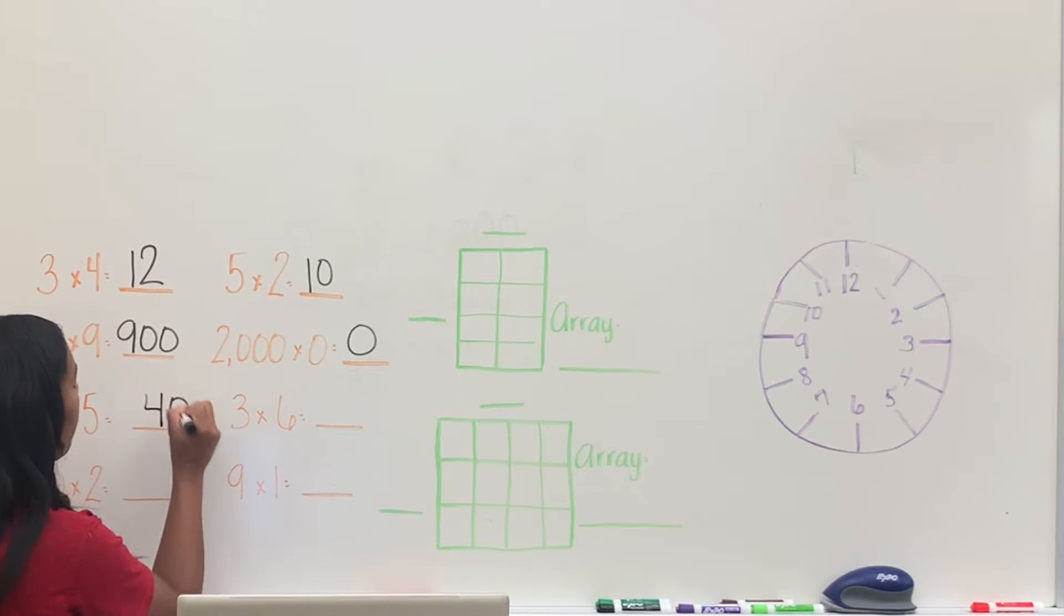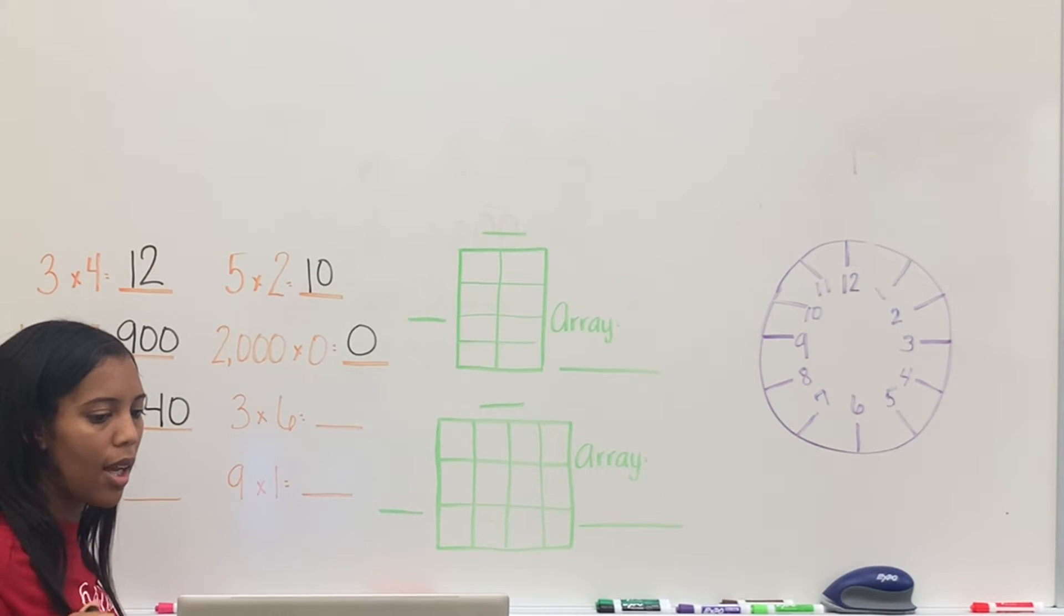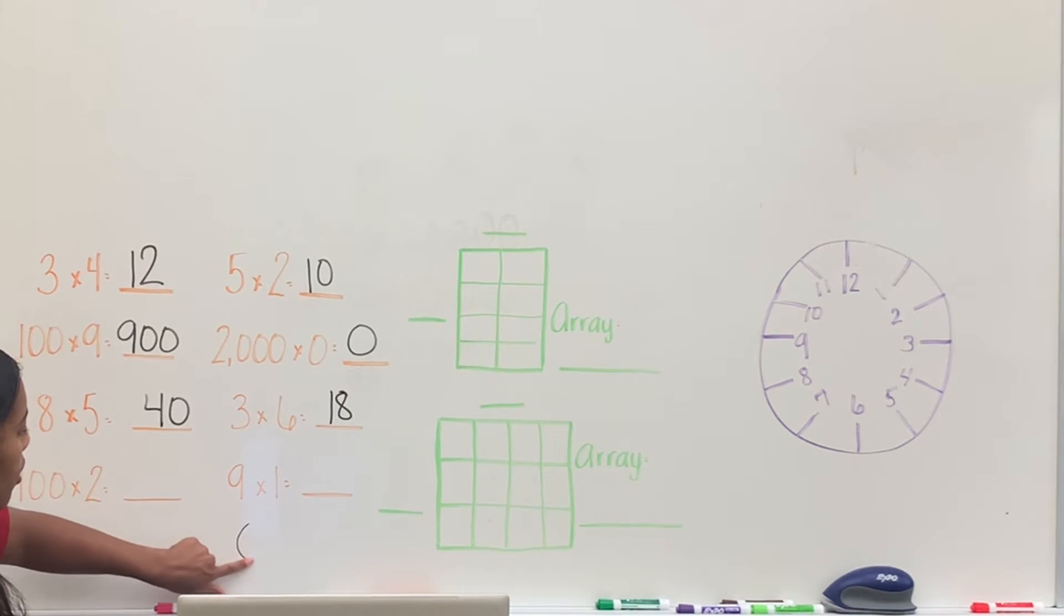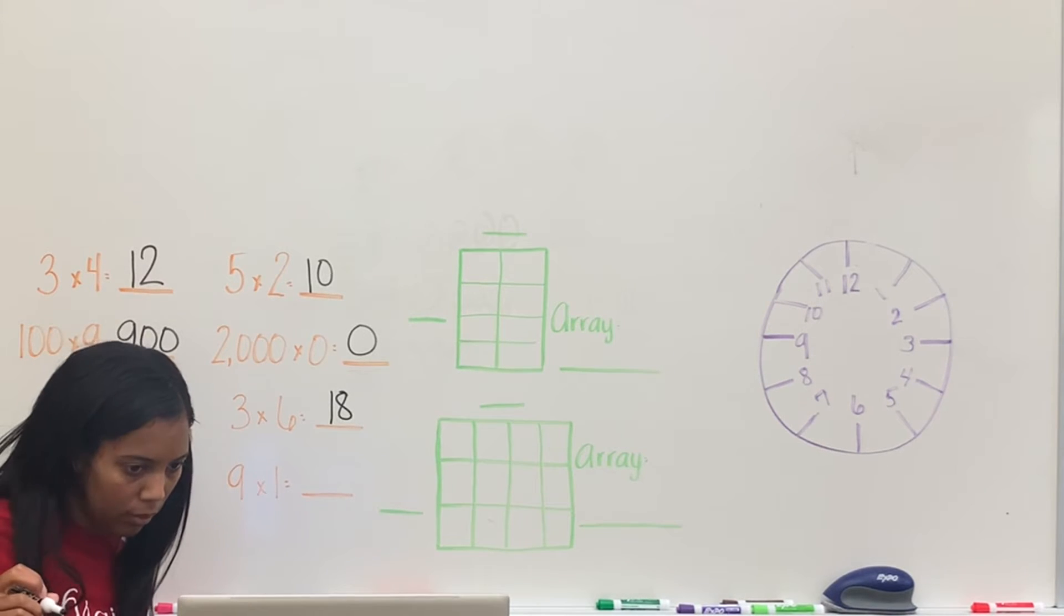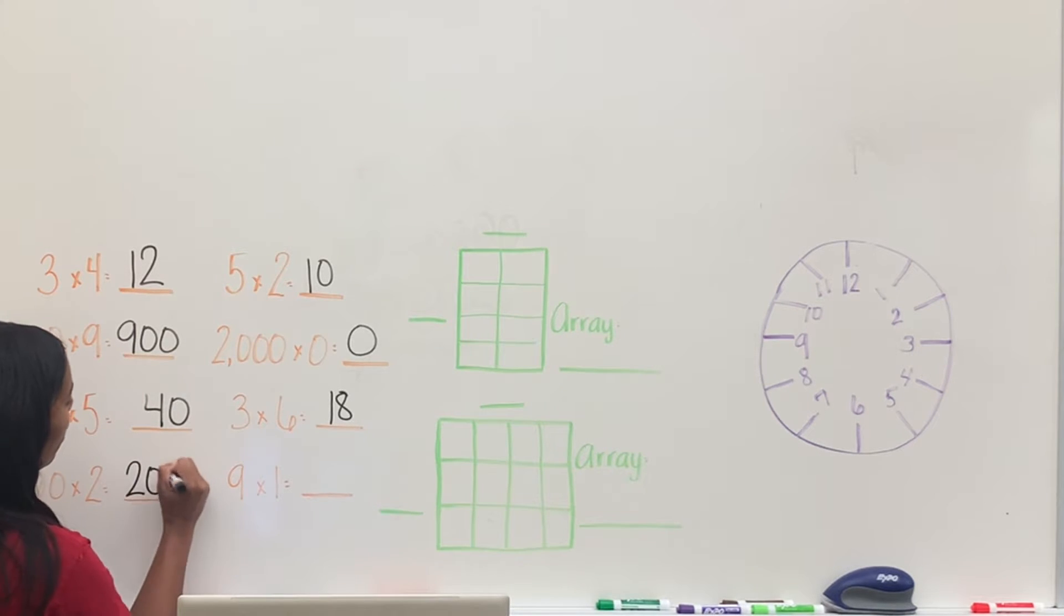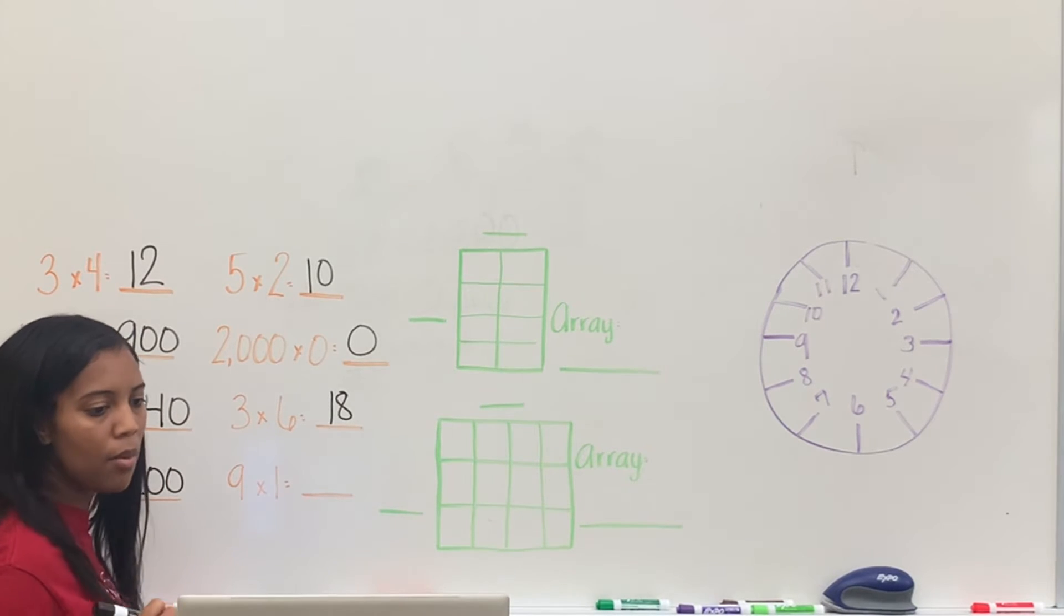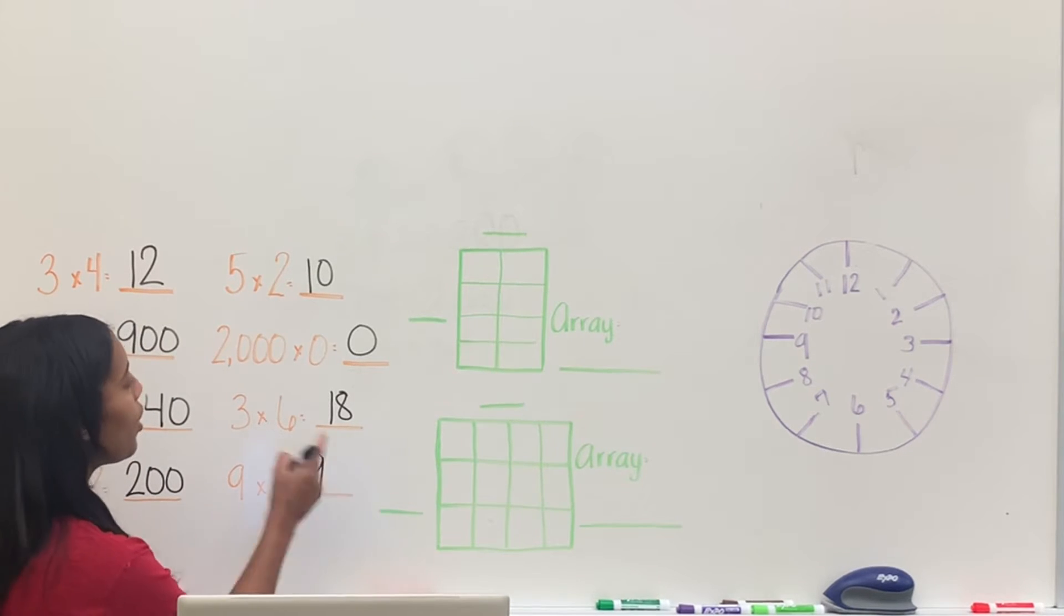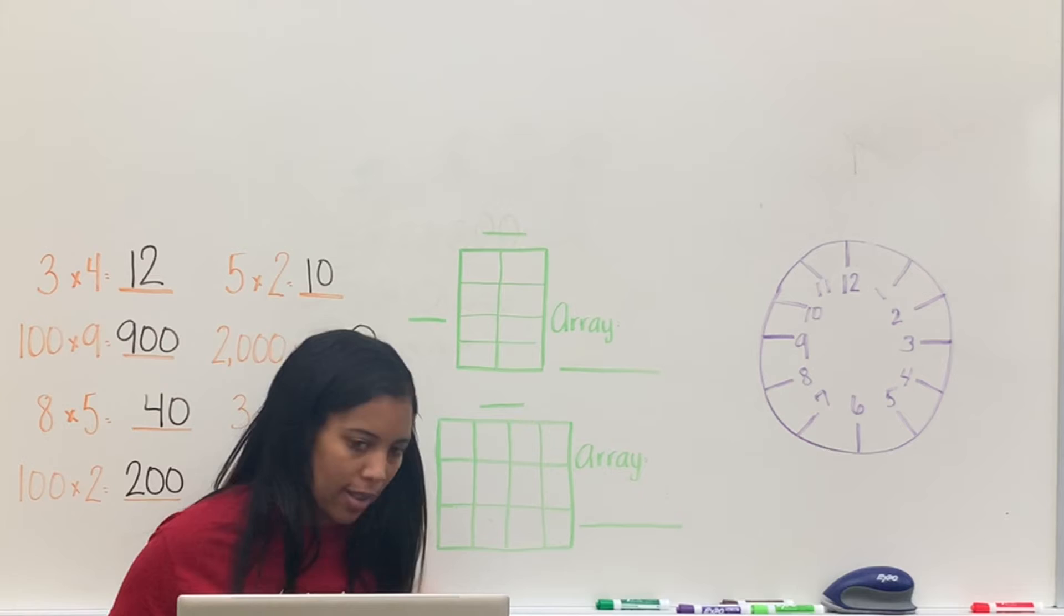Yes, 6 times, I'm sorry, 3 times 6. 3 times 6. Yeah, 18. Next one, 100 times 2. 100 times 2. Cadence? 200. 200. And then 9 times 1. 9 times 1. Chez? 9. 9. Yes, anything that's times 1 is always the number. Always.